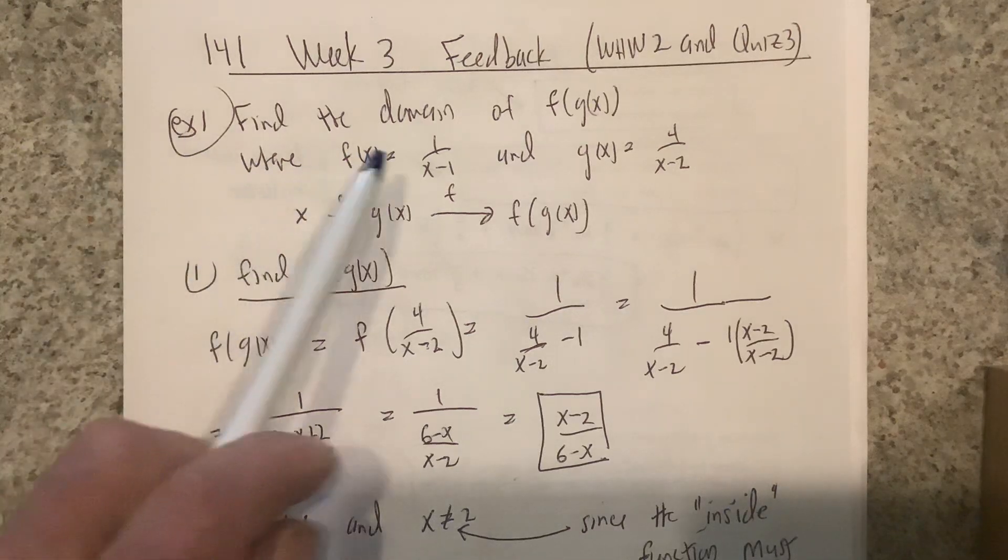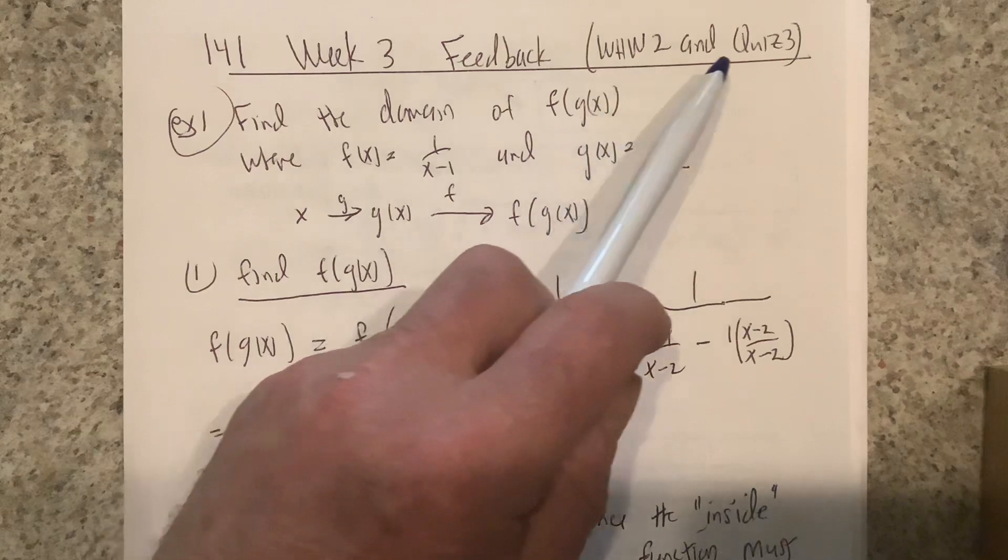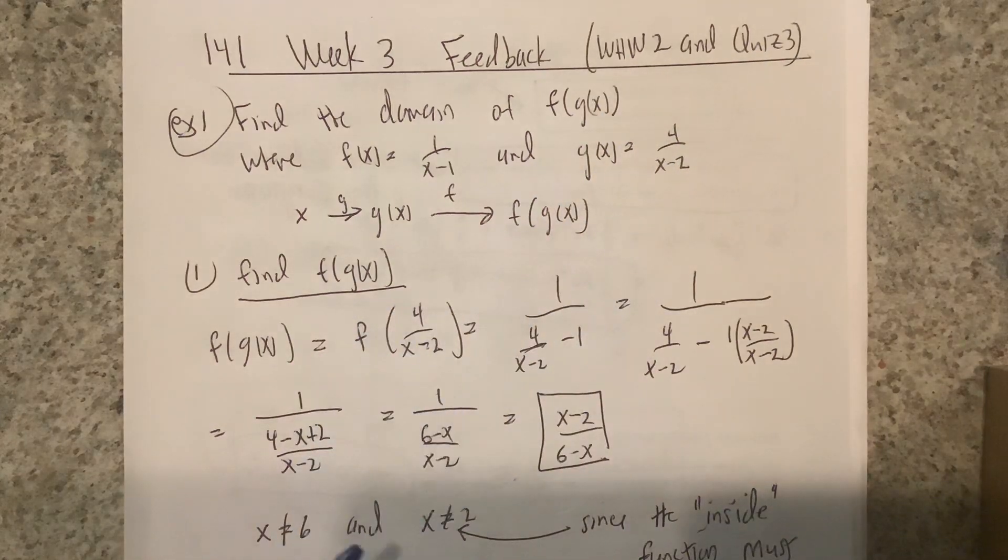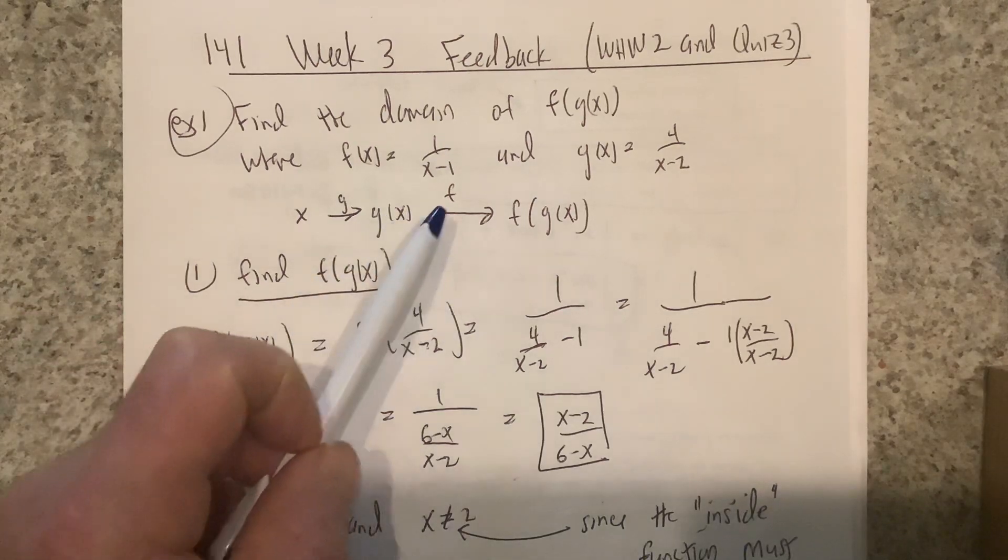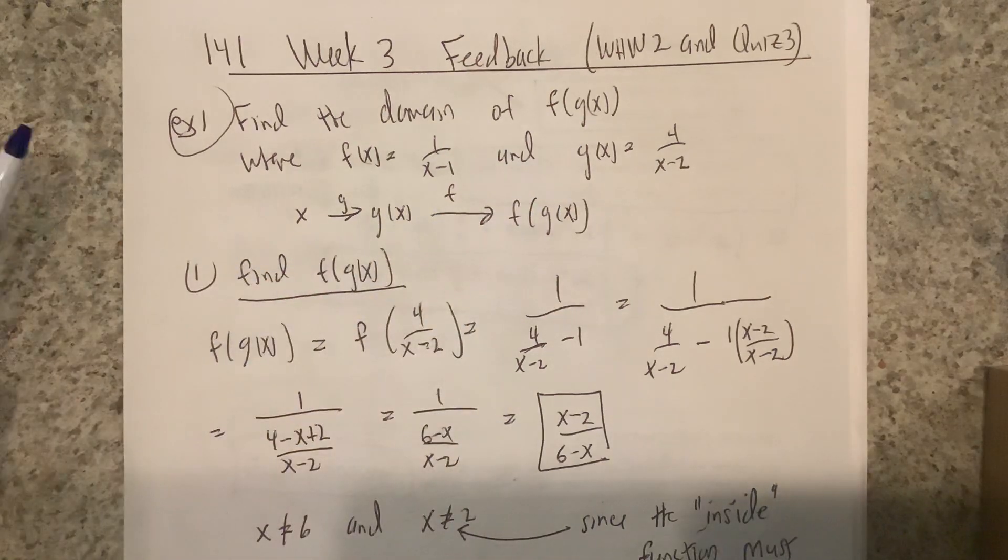Okay, here's a little feedback from written homework number two and quiz three. There were a couple problems that were commonly missed, so I want to talk about those. The most commonly missed problem was the one where they want you to find the domain of the composition of two functions. What makes that harder is that it's two stages.